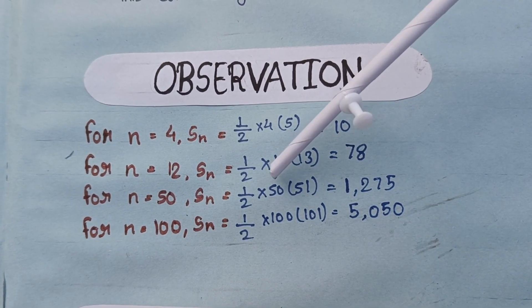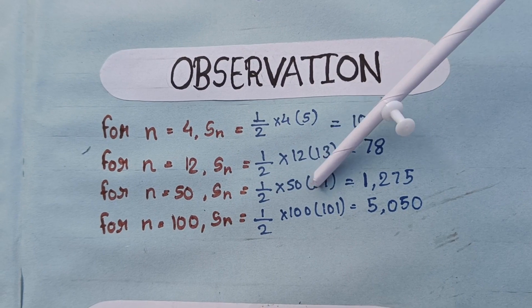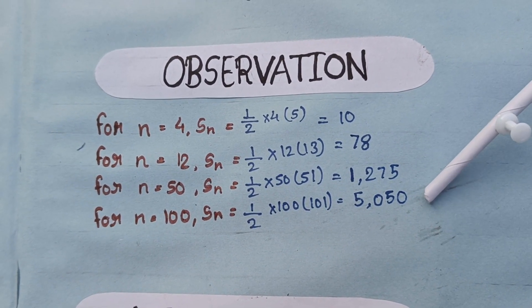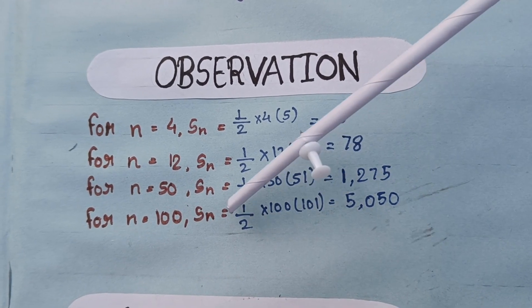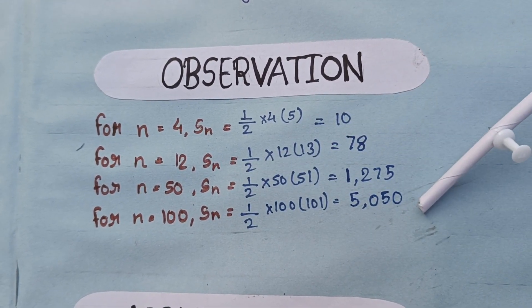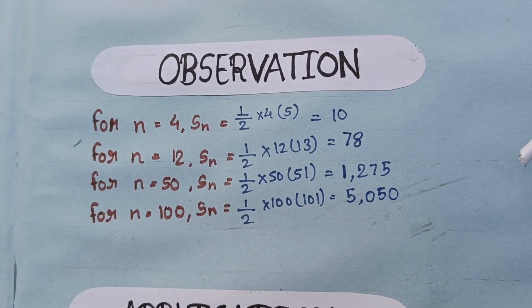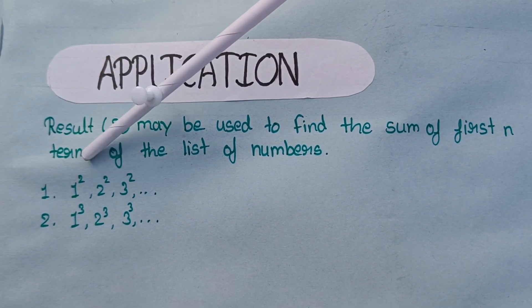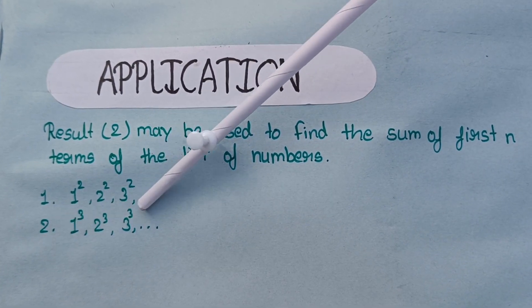And for N equals 50, sum is half of 50 into 51 which is 1,275. And for N equals 100, sum is half of 100 into 101 which gives 5,050. This result is to be used to find the sum of square of natural numbers and cube of natural numbers.